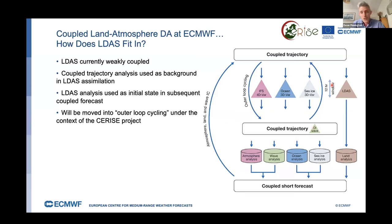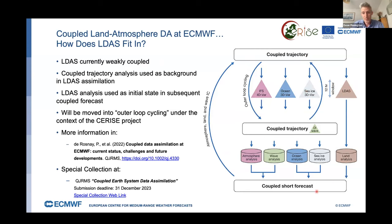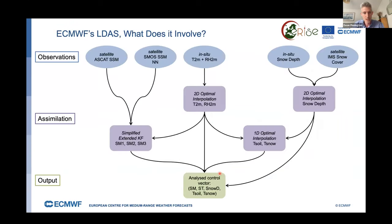We are working towards bringing the land DA into the outer loop cycling, like we have the ocean and sea ice at the moment, and that will hopefully be there in the next year or two. For more information on the full system, there is a paper by Patricia and many others in QJRMS called 'Coupled Data Assimilation at ECMWF: Current Status, Challenges and Future Developments'. There is also a current collection at QJRMS on Coupled Earth System Data Assimilation — feel free to submit papers there.